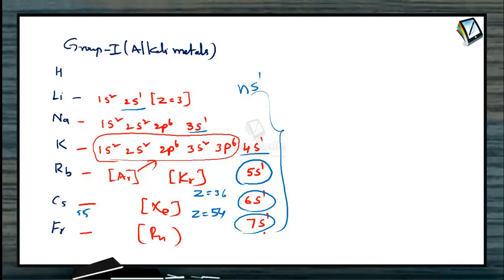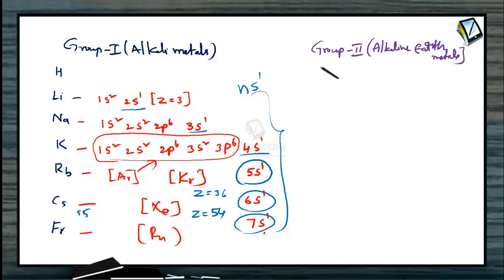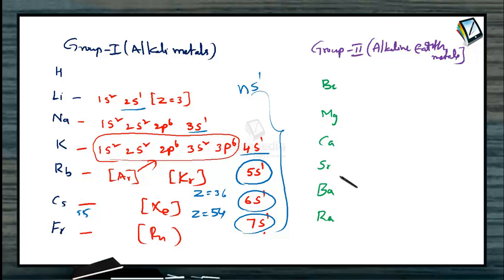Coming to Group 2 elements, usually called alkaline earth metals, the members are beryllium, magnesium, calcium, strontium, barium, and radium. For all Group 2 elements, the last electrons or valence electrons fill the S orbital, specifically the s2 orbital, meaning there are 2 electrons in the valence shell.